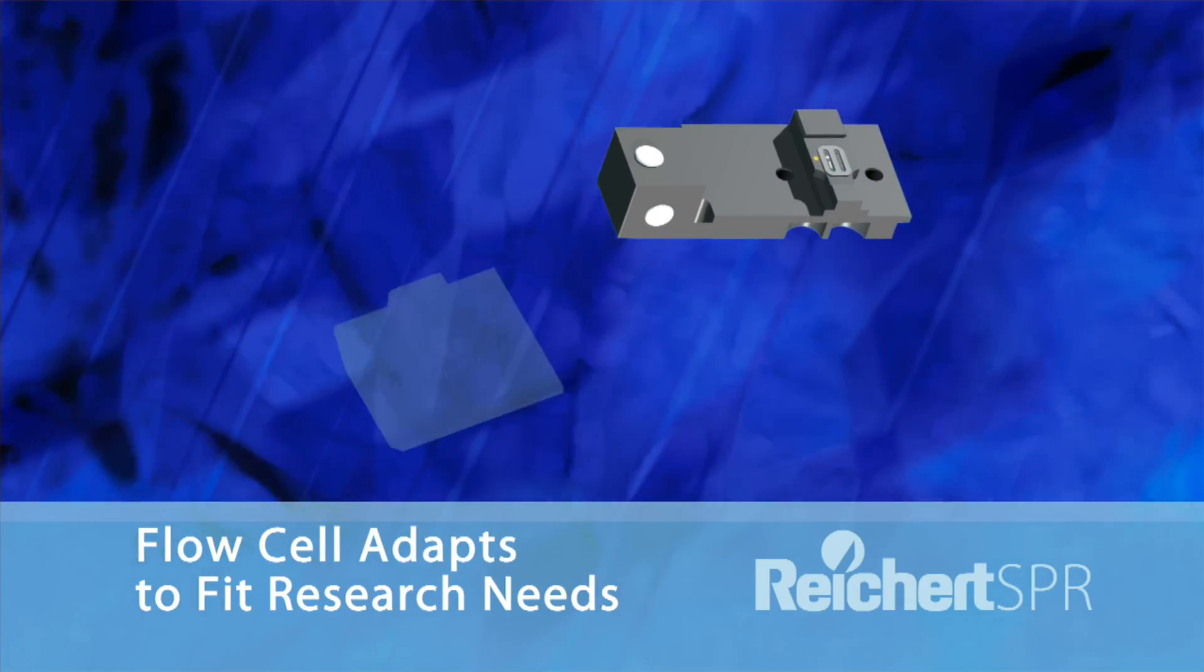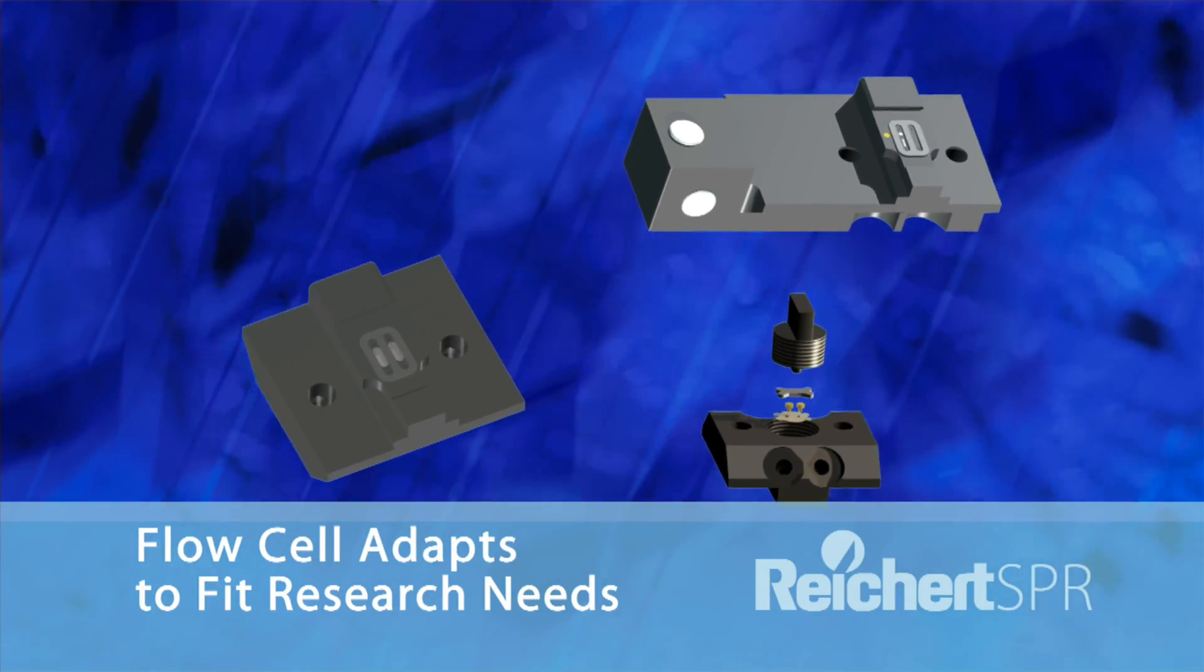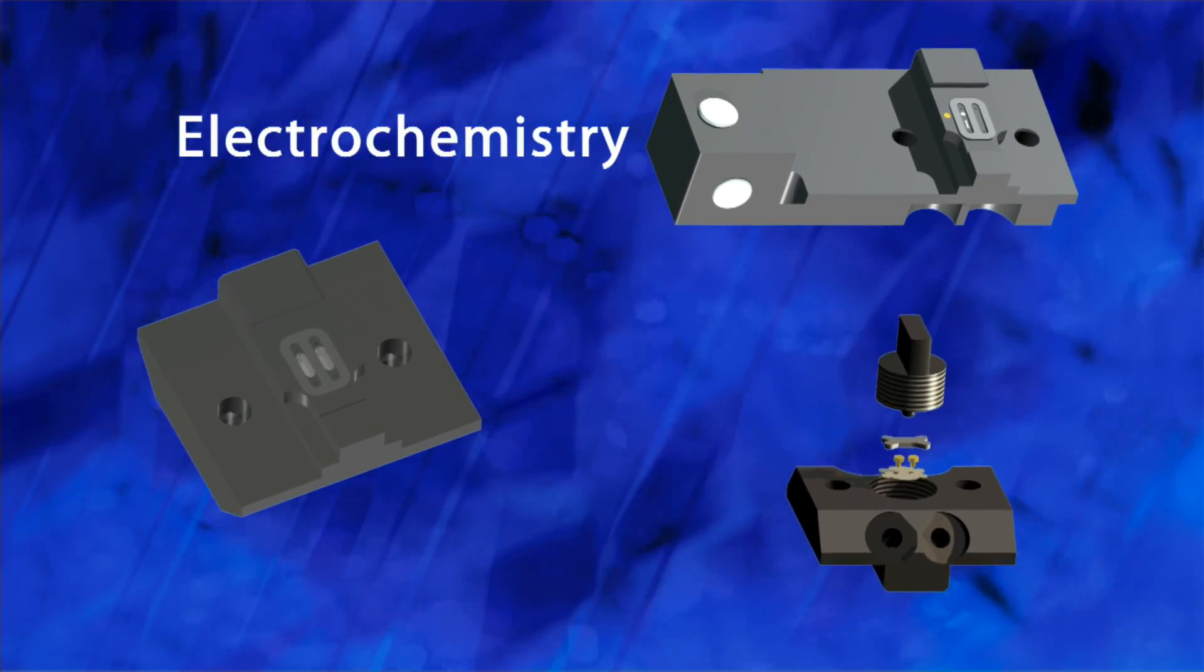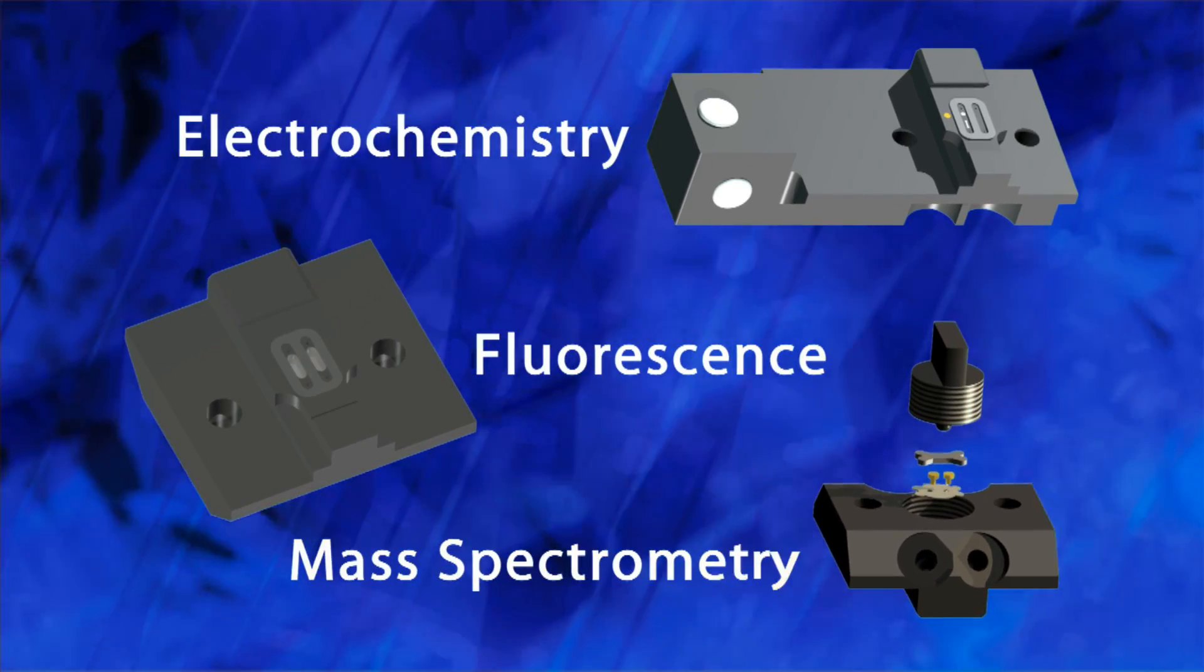The Reichert SPR system can also be applied to more specialized applications, such as electrochemistry, fluorescence, and mass spectrometry.